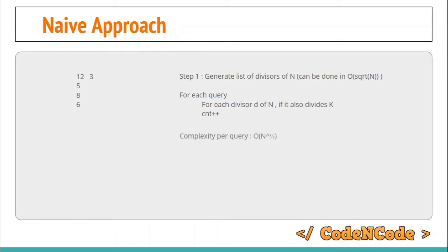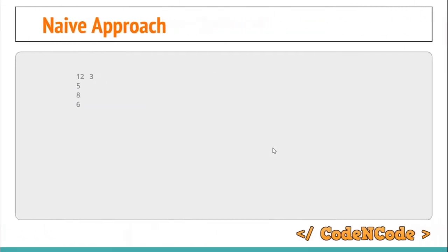What is the time complexity of this approach? The complexity is roughly N^(1/3) per query. The rough estimate for the total number of divisors of any integer N is N^(1/3), which is the cube root of N. Since N can be as large as 10^12, 10^12 raised to 1/3 is 10^4. So for each query you make roughly 10^4 operations, which will result in TLE for the problem. The for loop will run only N^(1/3) times, so complexity per query is N^(1/3).